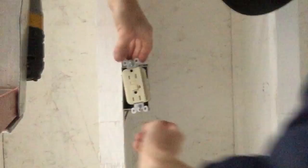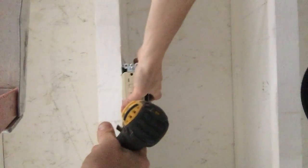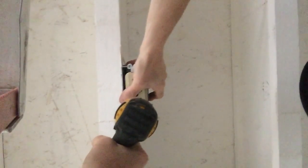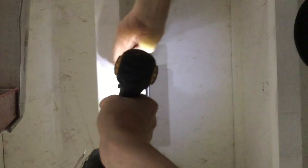Now if it doesn't work when you turn the power back on, you might have to switch those wires around. You might have them in the wrong spot. You might have the line hooked up to the load and the load hooked up to the line, in which case the outlet will not work.